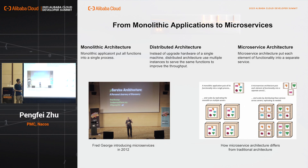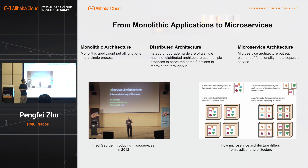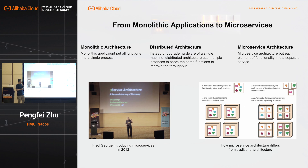It may be impossible to handle all traffic in one single node. So here comes the distributed architecture. Distributed architecture would divide the single process into multiple processes, and each process will just serve the same functions. The load balance strategy will be used to distribute the traffic between different processes. But in distributed architecture, every process still shares the same code, so as the application becomes more and more complex, it's even more difficult to maintain all functions in one application.